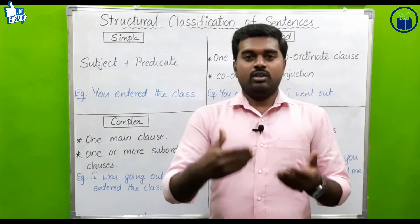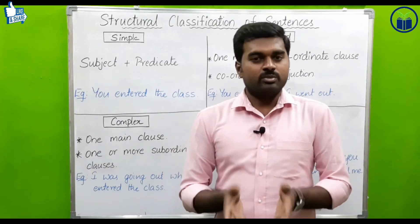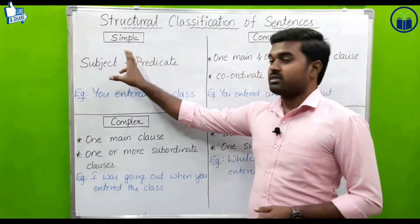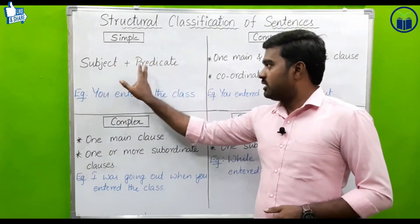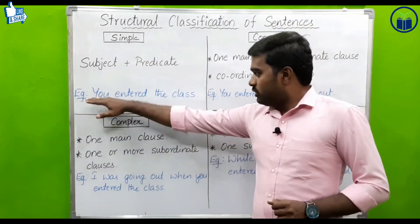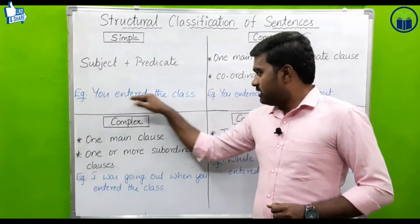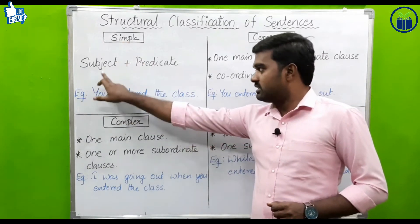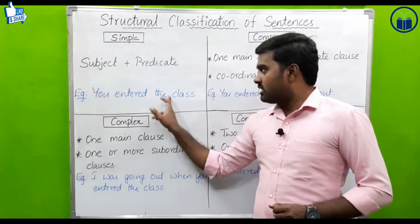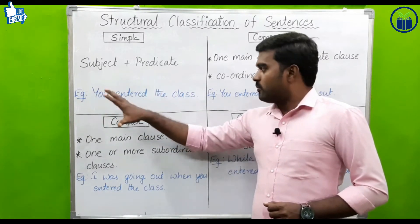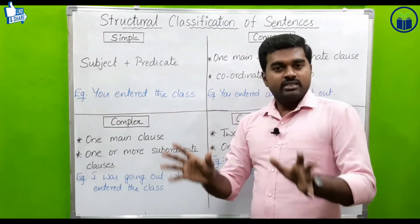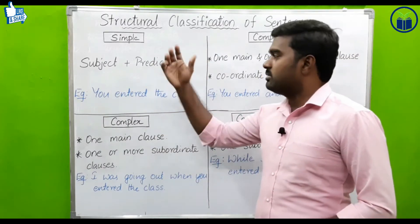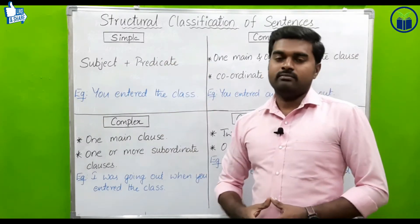For example: 'You entered the class.' Here, 'you' is the subject and 'entered the class' is the predicate. So a sentence without complexity — with just a plain subject and predicate — we call a simple sentence.